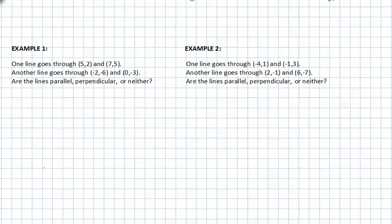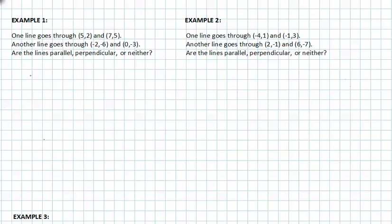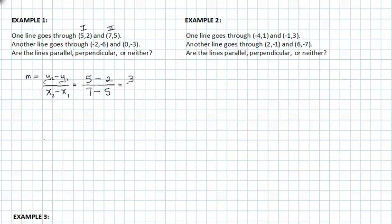Let's look at example one. One line goes through (5, 2) and (7, 5), and another line goes through (-2, -6) and (0, -3). Are the lines parallel, perpendicular, or neither? First we have to find the slopes of each line. M equals y₂ minus y₁ over x₂ minus x₁. This gives us five minus two over seven minus five, which is the same as three over two.